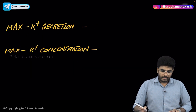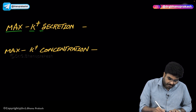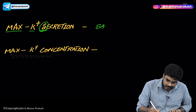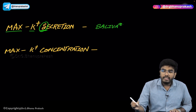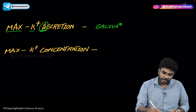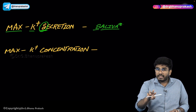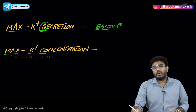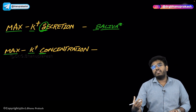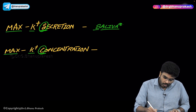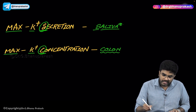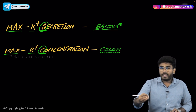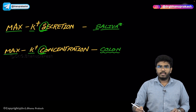A few more important points about saliva: the maximum potassium secretion in the body happens into saliva — this is a common MCQ in FMG and PG exams. However, if the question asks which body secretion has the maximum concentration of potassium, the answer is colonic secretions. So: maximum secretion of potassium occurs in salivary secretions, but maximum concentration of potassium is in colonic secretions.